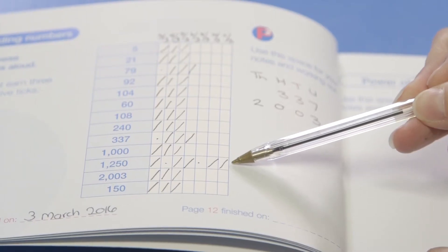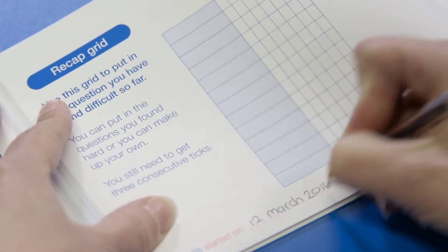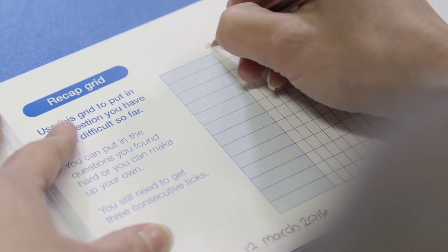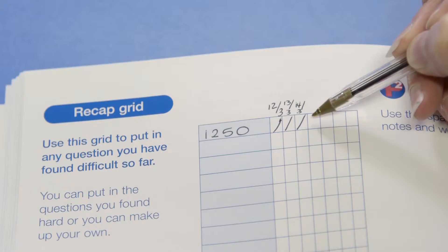If you reach the end of the grid and there's still a question which hasn't got three consecutive ticks, write that question in the next recap grid. These can be found at regular intervals throughout the book. Continue to ask that question until there are three consecutive ticks.